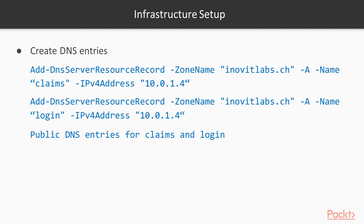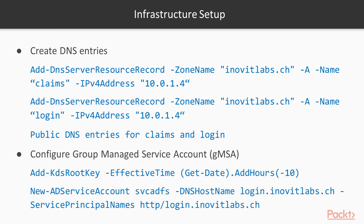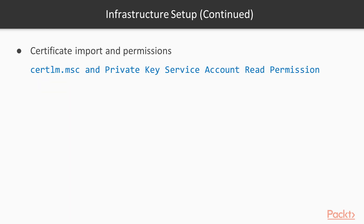First we need to set up the infrastructure requirements. We need to configure the internal and external DNS records for our ADFS infrastructure and the demo claims application. Next we add a KDS root key to our environment to use and configure group managed service accounts. Afterwards we will import an SSL certificate for our ADFS configuration and configure the appropriate permissions for the ADFS service accounts to access the private key of the certificate. To request a public certificate you can use, for example, 90-day free certificates from Comodo, or a certificate from another PKI.